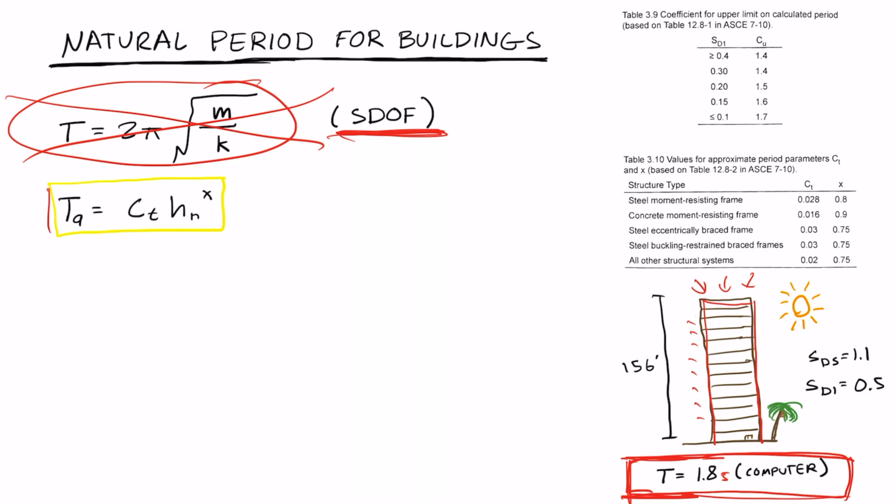This is the equation for the approximate period. We have TA equals CT times H sub n raised to the X. We're going to use this table here, based on table 12.8-1 from ASCE 7-10. One important thing is we need to know what type of building this is. This is a special reinforced concrete shear wall building given in the prompt, so this would go under all other systems right here.